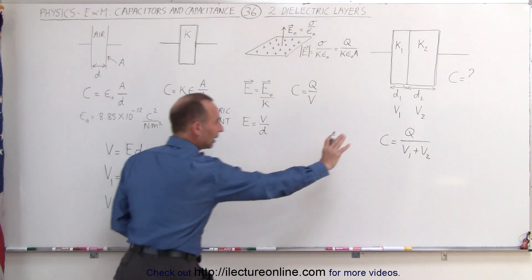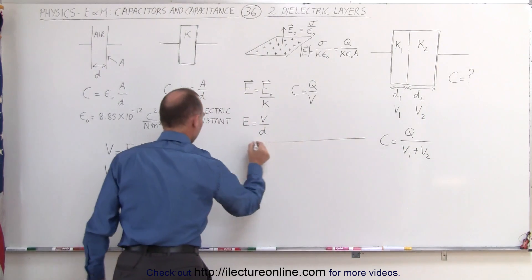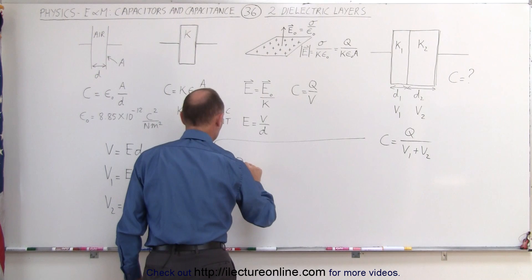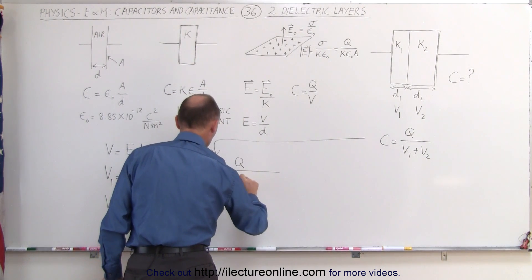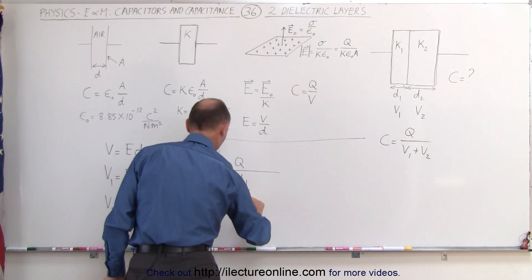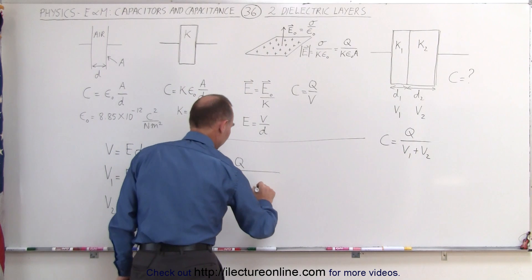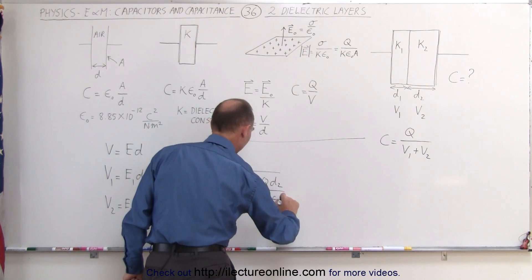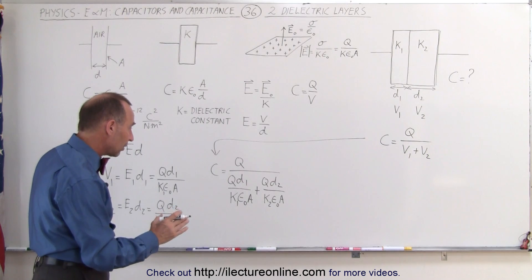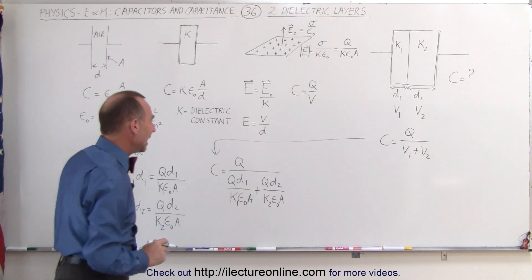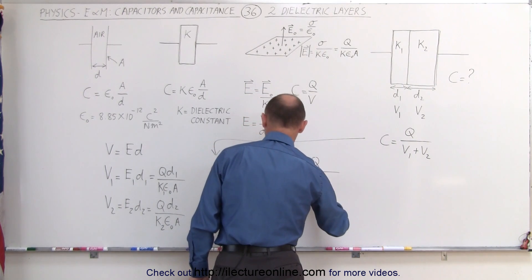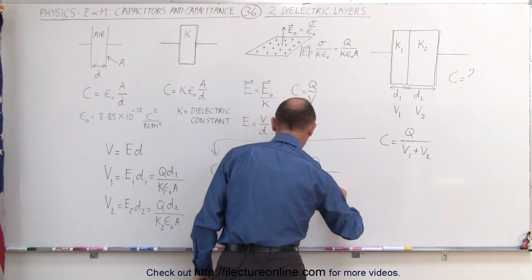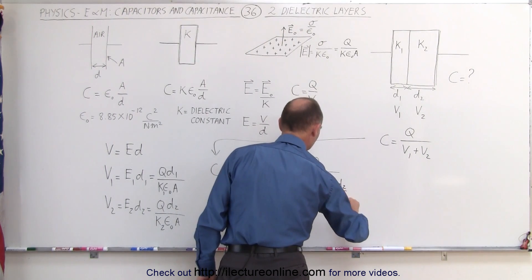I can substitute those two values into the capacitance equation. The capacitance of a capacitor with two dielectric layers is Q divided by the sum of the two voltages: Q times D1 over K1 epsilon sub nought times A, plus Q times D2 over K2 epsilon sub nought times A. Notice that in the denominator we can factor out Q, epsilon sub nought, and A. This gives us epsilon sub nought times A divided by the quantity D1 over K1 plus D2 over K2.